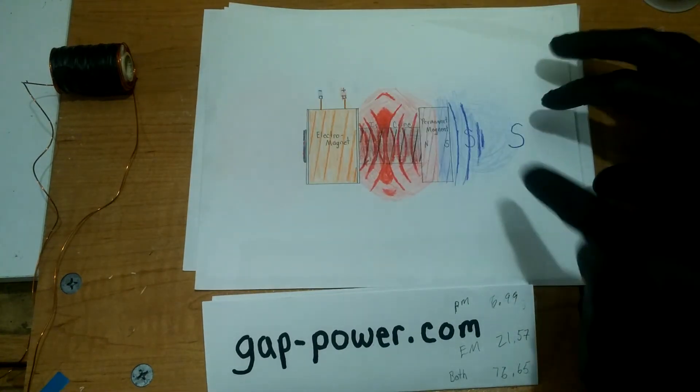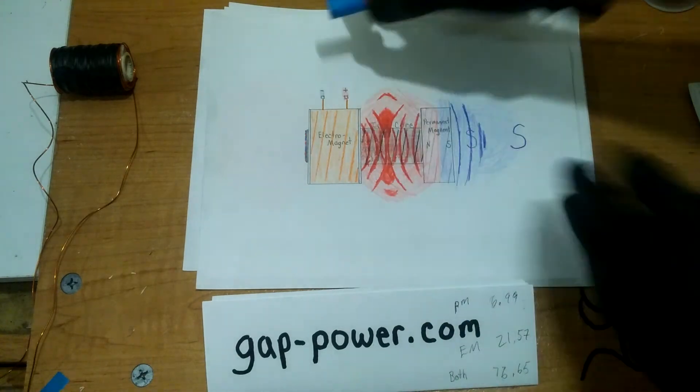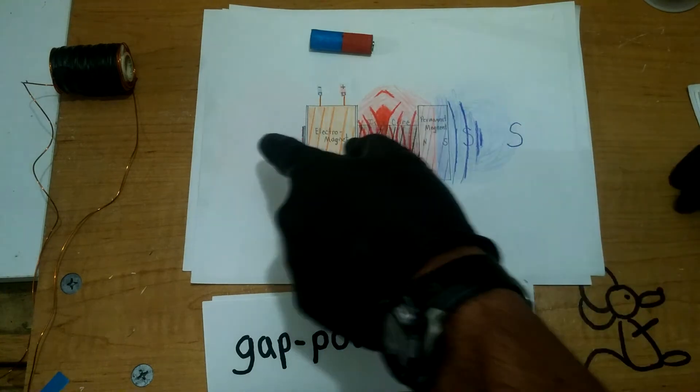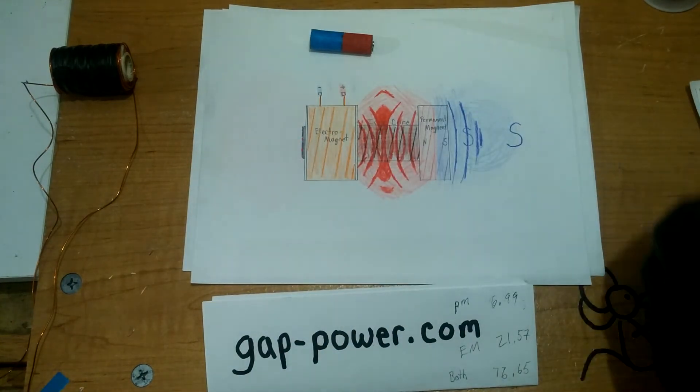Or you can reverse the polarity and neutralize the magnetic field at the tip of the core.